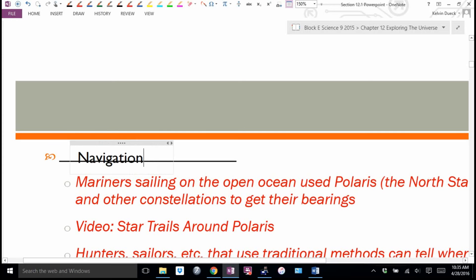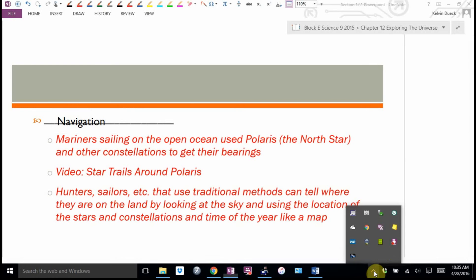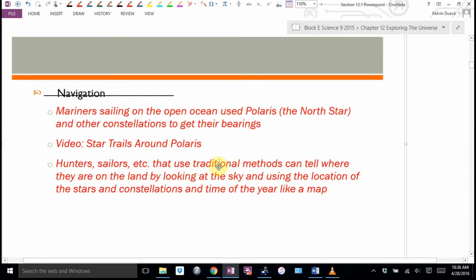Mariners sailing in the open ocean used Polaris, the North Star, and other constellations to get their bearings. So hunters, sailors, etc. that use traditional methods can tell where they are on land by looking at the sky and using the location of the stars and constellations and the time of year like a map.